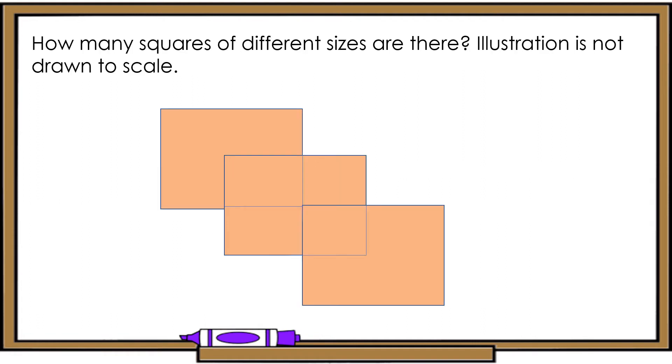How many squares of different sizes are there? Illustration is not drawn to scale. So, this is 1. 1, so 2, and 3. Then, 4, 5, 6, and 7. So, there are 7 squares.